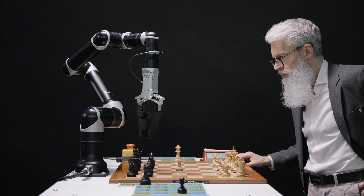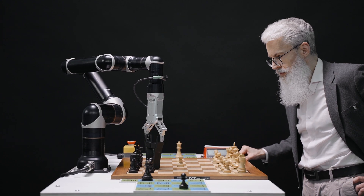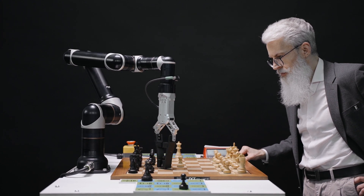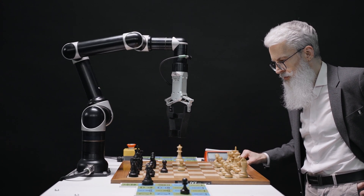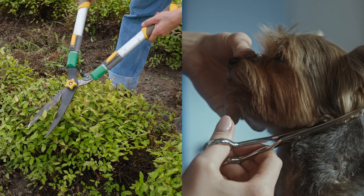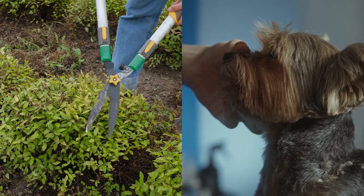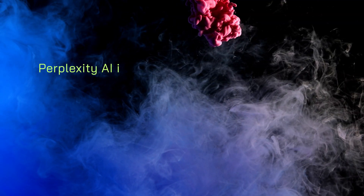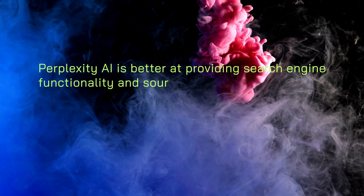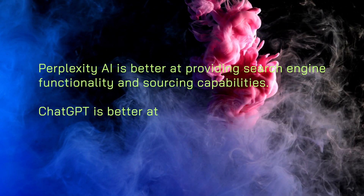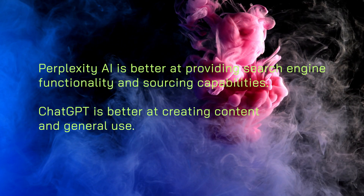Final thoughts. Perplexity AI and ChatGPT are both extremely powerful AI tools with unique features to help answer queries and generate content. Which tool is better can only be decided on a case-by-case basis. In general, Perplexity AI is better at providing search engine functionality and sourcing capabilities, while ChatGPT is better at creating content and general use.